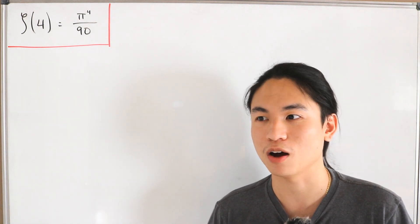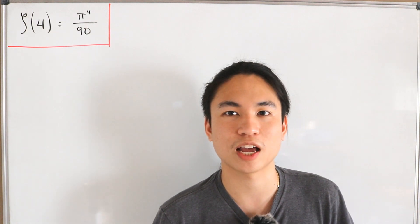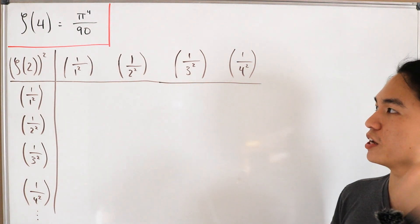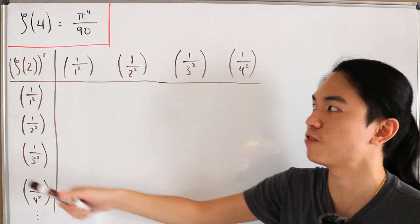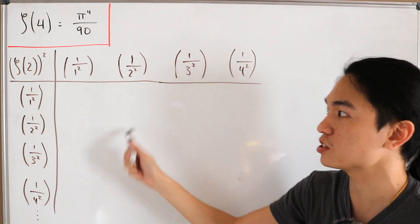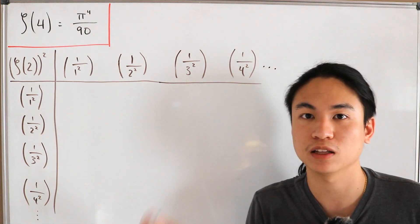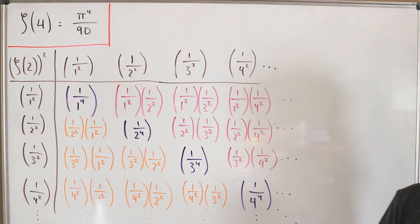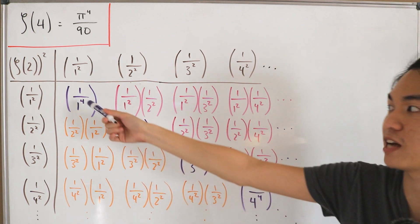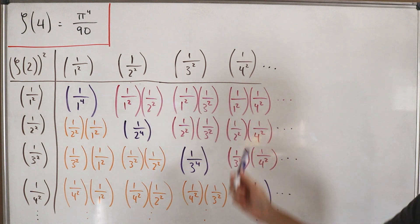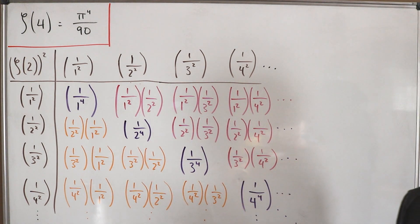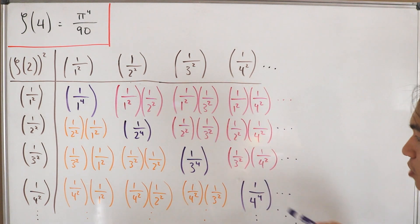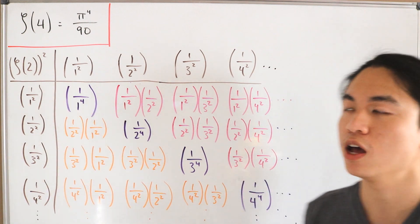Personally, I think this is the most elegant proof of ζ(4) = π⁴/90. Let's jump right in and create the multiplication table. We take products of the Riemann zeta of 2 values: the product of each pair of entries fills in the table. Since the Riemann zeta is an infinite series, this goes on infinitely, so I'll cut to the next clip where the rest of the entries are filled in.